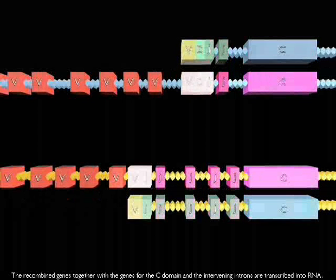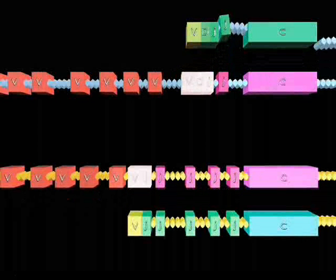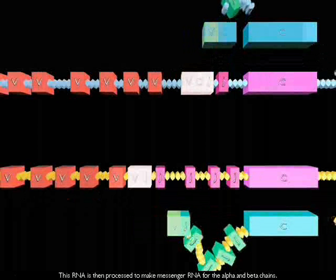The recombined genes together with the genes for the C domain and the intervening introns are transcribed into RNA.